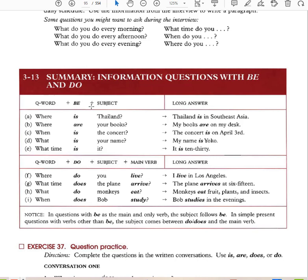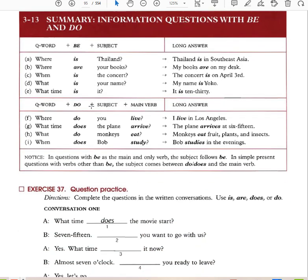More question words with 'be': Where is Thailand? In Southeast Asia. Where are your books? On my desk. When is the concert? On April 3rd. What is your name? Yoko. What time is it? 10:30. Where do you live? In Los Angeles. What time does the plane arrive? At 6:15. What do monkeys eat? Fruits, plants, and insects. What does Bob study? Bob studies in the evening. For a short question: question word + be + subject.